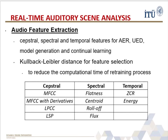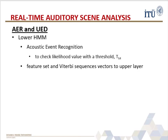Different cepstral, spectral, and temporal types of audio features listed in the table are evaluated in terms of event recognition performance and computational time of the continual learning process. Also, using Kullback-Leibler distance, feature selection is employed to reduce the computational time of the continual learning process by retraining. The hierarchical hidden Markov model used in this work is composed of two layers. The lower layer includes one hidden Markov model for each event, and all HMMs are utilized for acoustic event recognition by comparing the best likelihood value with an event-wise threshold that is dynamically updated.